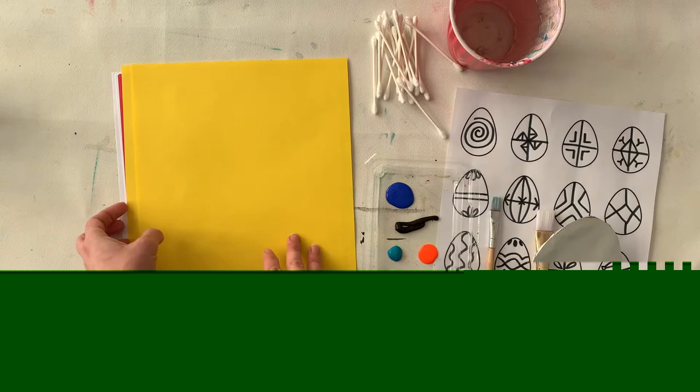It takes a little while to figure out how hard to press down and how much paint to put on. So look, that one didn't turn out super well. It's a little bit light. You can't really tell that it's supposed to be an egg because it doesn't have very much paint on it. But that's okay because we're doing this for the process and for the experience.